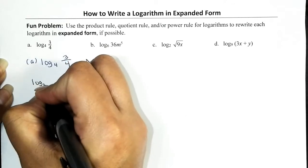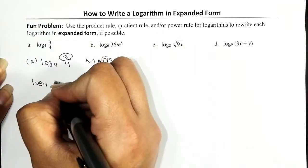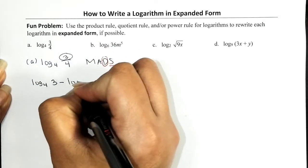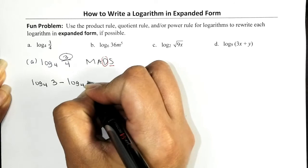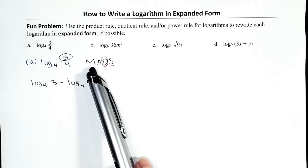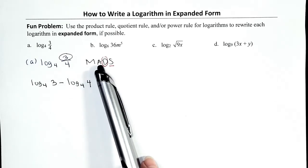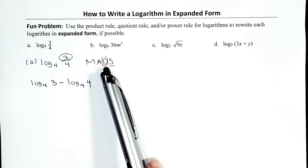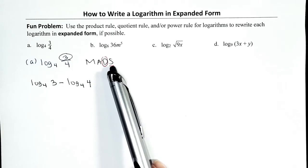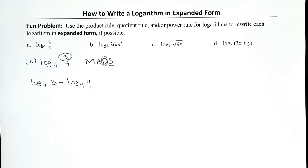Since the argument is a division problem, when we expand the log we write it as a subtraction problem. So we have logarithm base 4 of the numerator, which is 3, minus logarithm base 4 of the denominator, which is 4. If the argument is a multiplication problem you expand as a sum; if it's division, you expand as a difference.